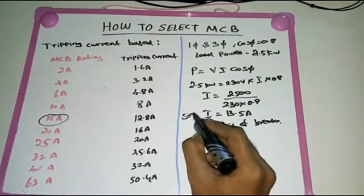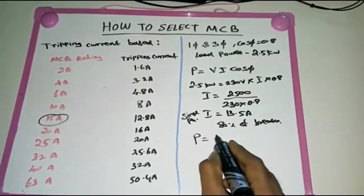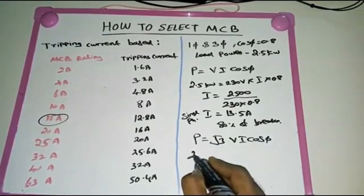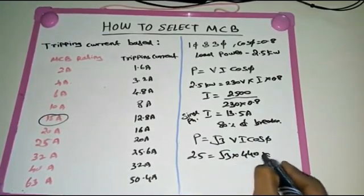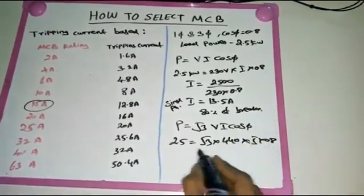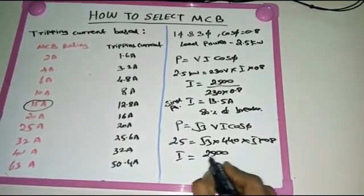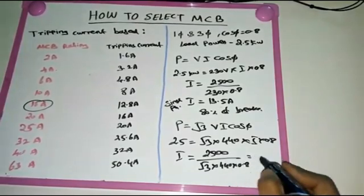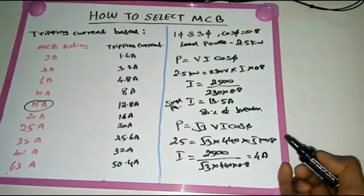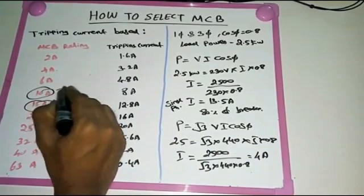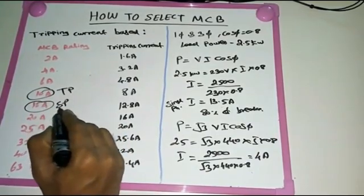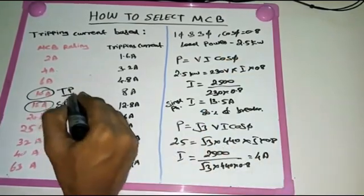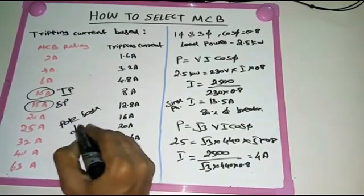For three phase with the same 2.5 kilowatt load, we use P = √3 × V × I × cos φ with voltage = 440V and power factor = 0.8. The calculated current comes to approximately 4 ampere. Since triple pole (TP) MCBs are not available below 10 ampere in small ranges, we select a 10 ampere TP MCB.